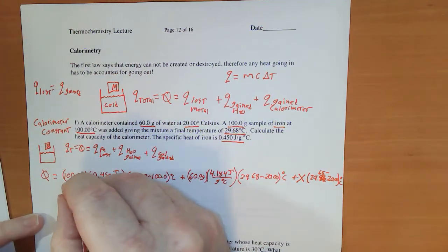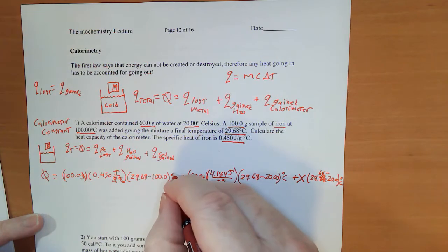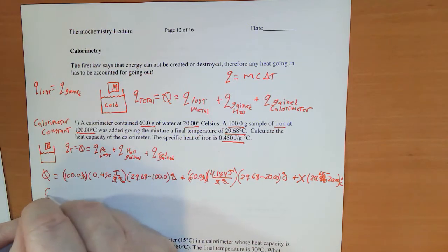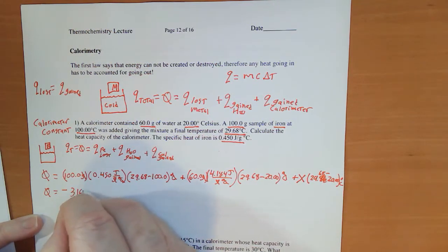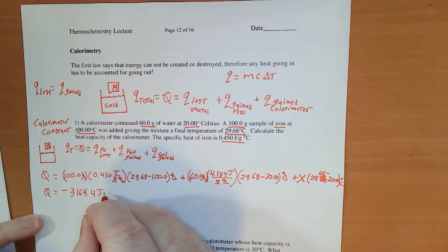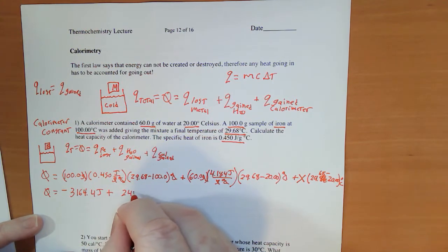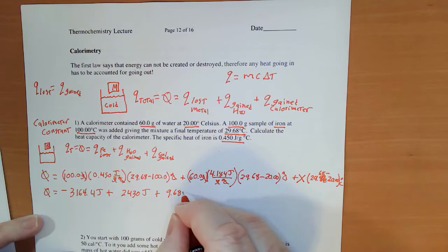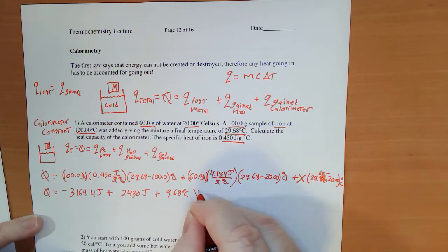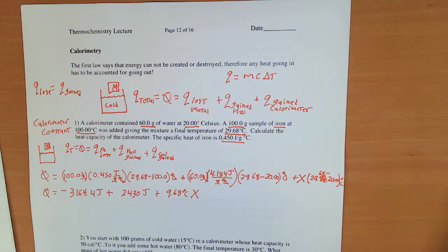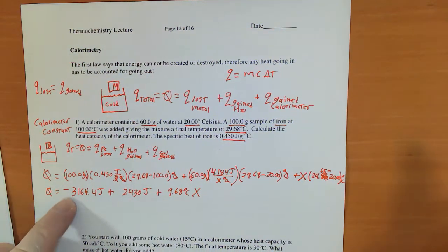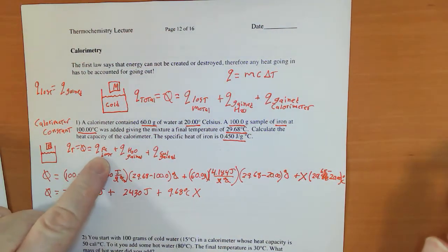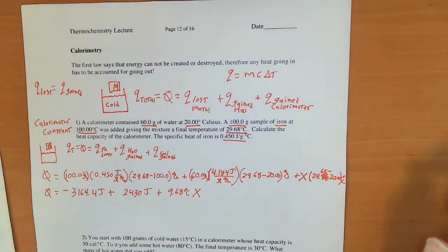Grams cancels grams, degrees Celsius cancels degrees Celsius, same thing's going to happen there. 0 equals negative 3164.4 joules, plus 2430 joules, plus 9.68 degrees Celsius times x. A little intuition here: the negative means that was heat that was released, and that actually matches what I'm saying here, what the iron lost. Positive means that heat was gained.